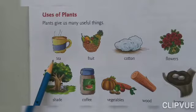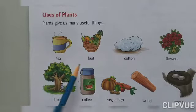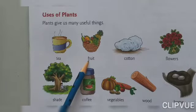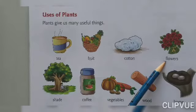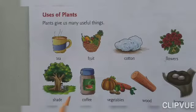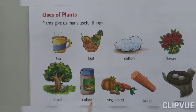We get tea — the tea leaves come from trees. Fruits, cotton, flowers, shade, coffee, vegetables, wood — and trees provide a home for birds too. They build their nests up in the trees. So plants are very useful in our lives.